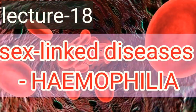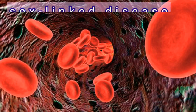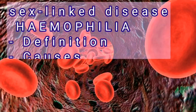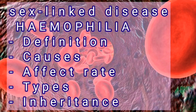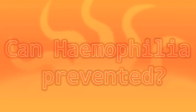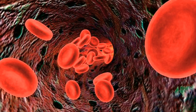Welcome students to another new video lecture on hemophilia, an example of sex-linked diseases. Here we will talk about its definition, causes, effect rate or incidence, types, and inheritance. Our question of the day is: can hemophilia be prevented by new methods? We will get the answer at the end of the video, so stay tuned.